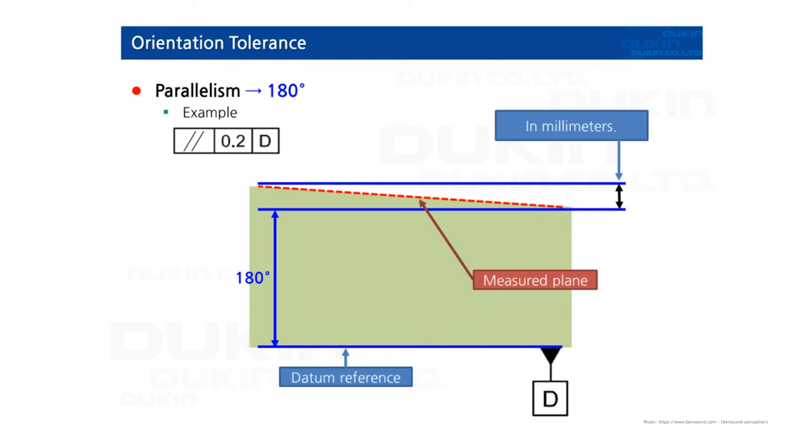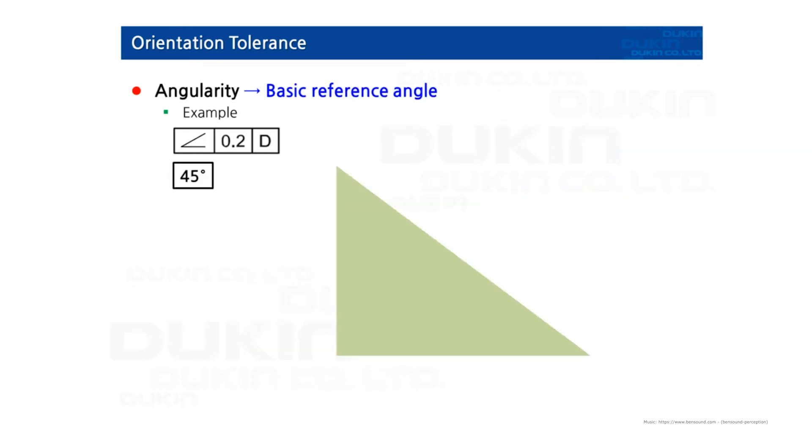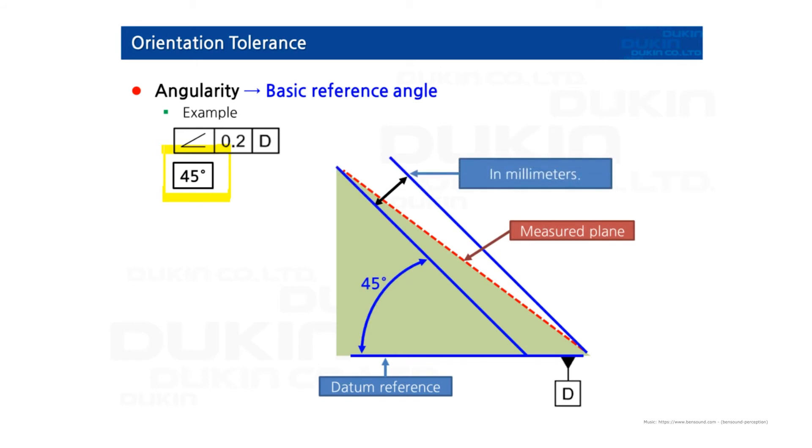For angularity, there's a basic reference angle of 45 degrees. Datum D plane is here and we measure a plane on the tapered surface. The surface shall be within two parallel planes 0.2 apart that are inclined at 45 degrees to datum plane D.